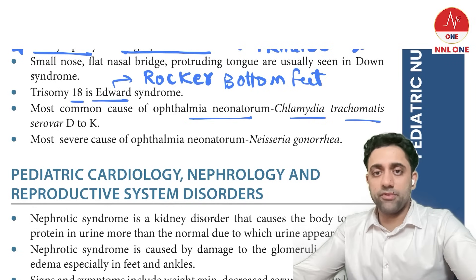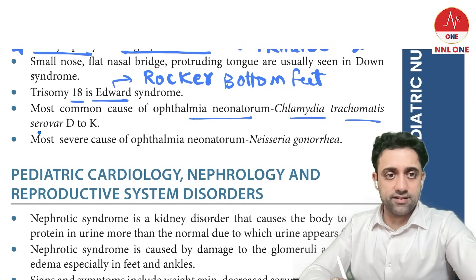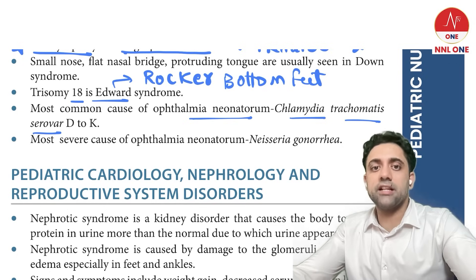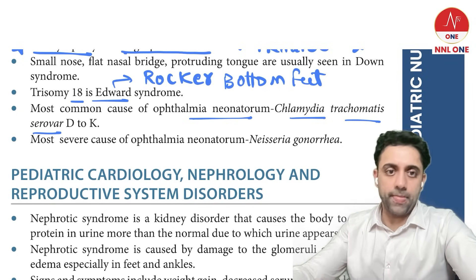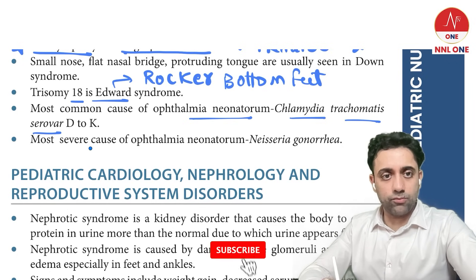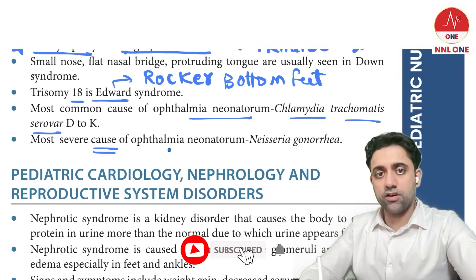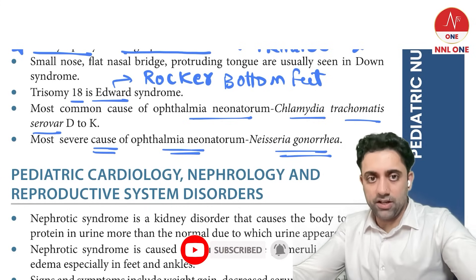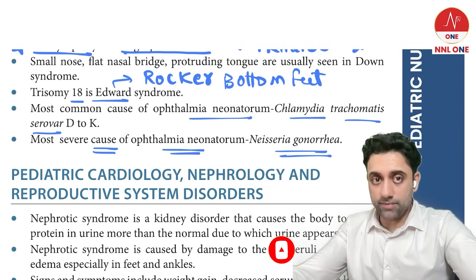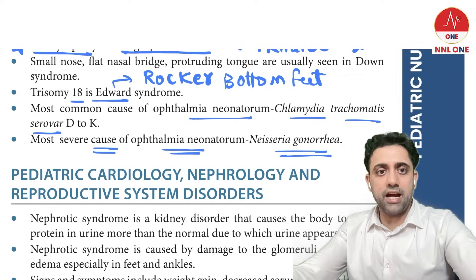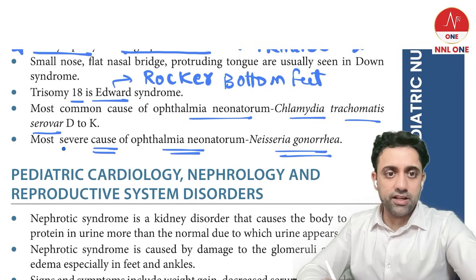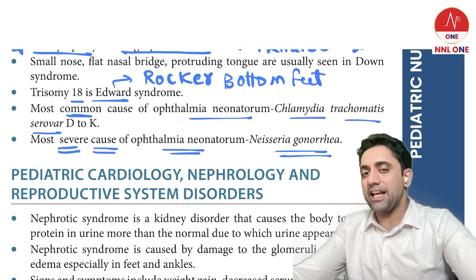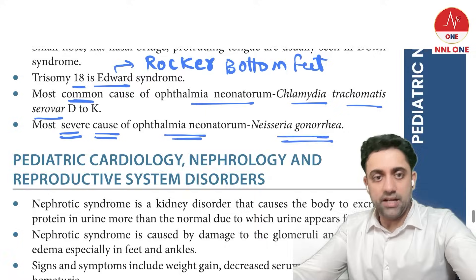Causes of ophthalmia neonatorum include Chlamydia trachomatis and other organisms. The most common cause is Chlamydia trachomatis; the most severe cause is Neisseria gonorrhoeae.